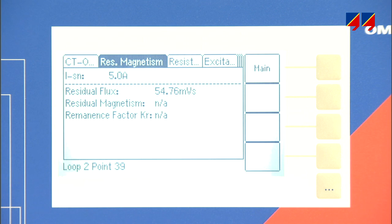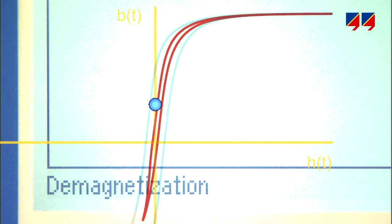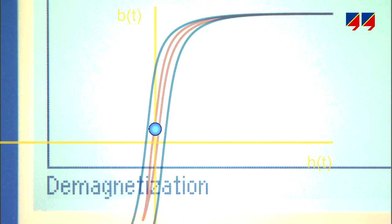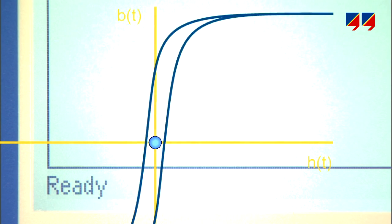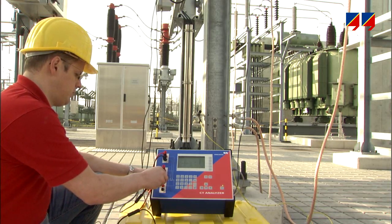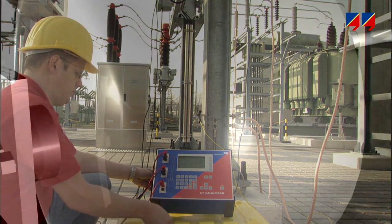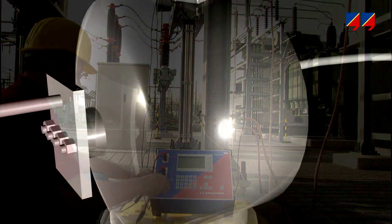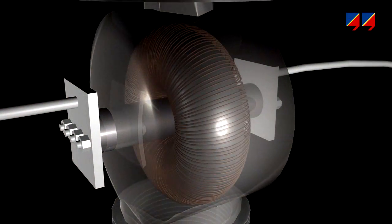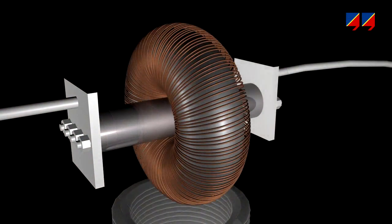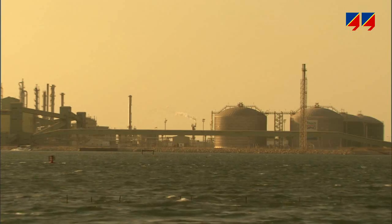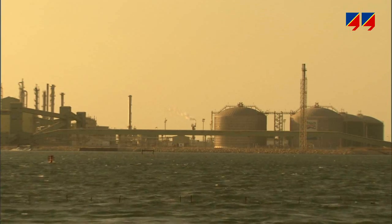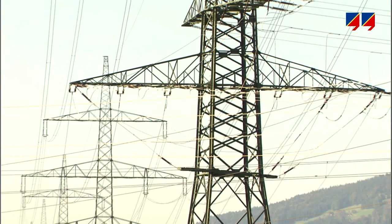After the magnetic remanence is measured, CT analyzer demagnetizes the CT to remove the remanence and return the CT to its optimum operating condition. Besides verifying the typical CT parameters, CT analyzer provides an added insight into the current transformer, assisting protection engineers to ensure a high level of reliability of the power system for existing and future installations.